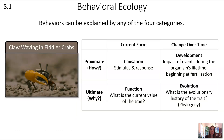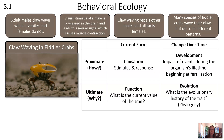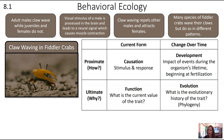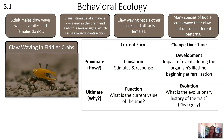Here we see a fiddler crab waving its claw. Let's figure out explanations for this behavior fitting four different categories. One: adult males claw wave while juveniles and females do not. Two: visual stimulus of a male is processed in the brain and leads to a neural signal causing muscle contraction. Three: claw waving repels other males and attracts females. Four: many species of fiddler crabs wave their claws but in different patterns.